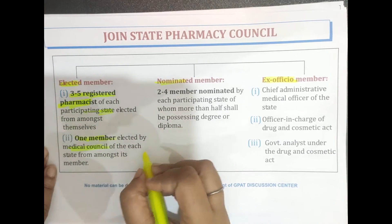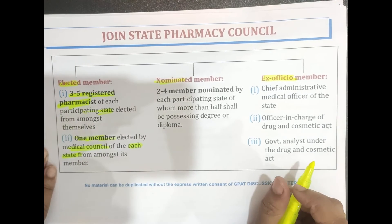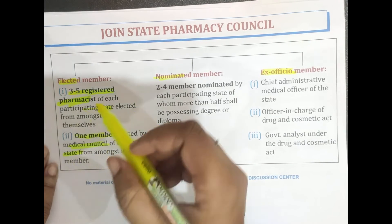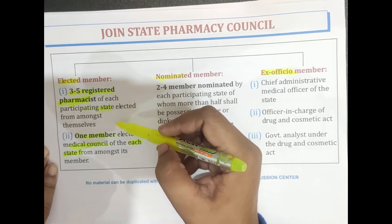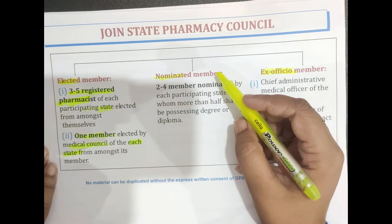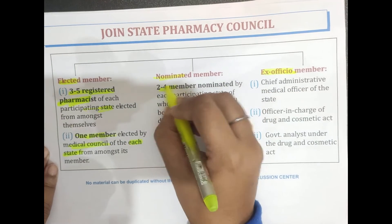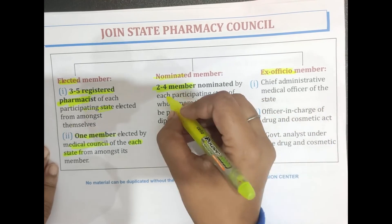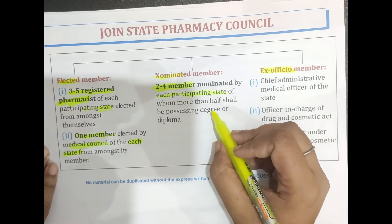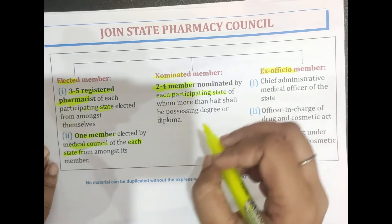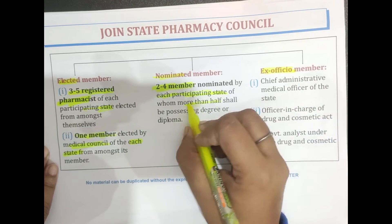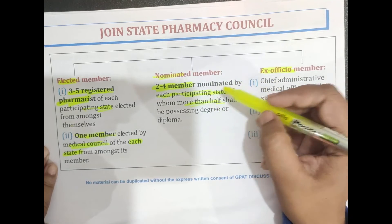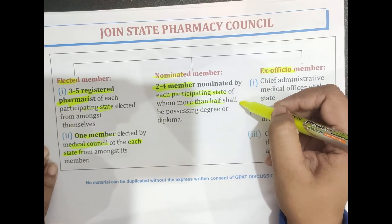In addition, one member is elected by the Medical Council of each participating state from amongst its members. For nominated members, two to four members are nominated by each participating state, of whom more than half shall possess a degree or diploma in pharmacy.